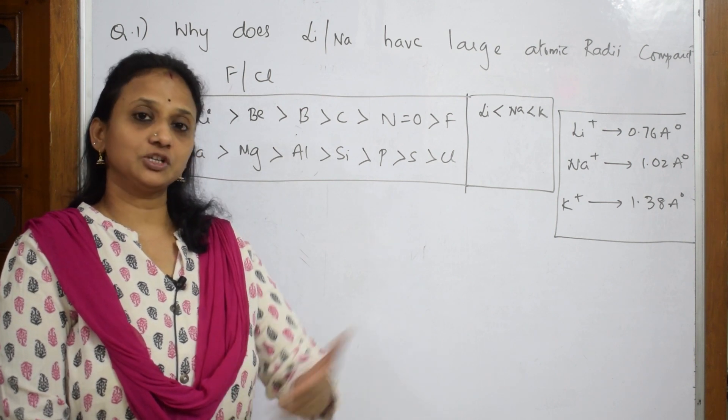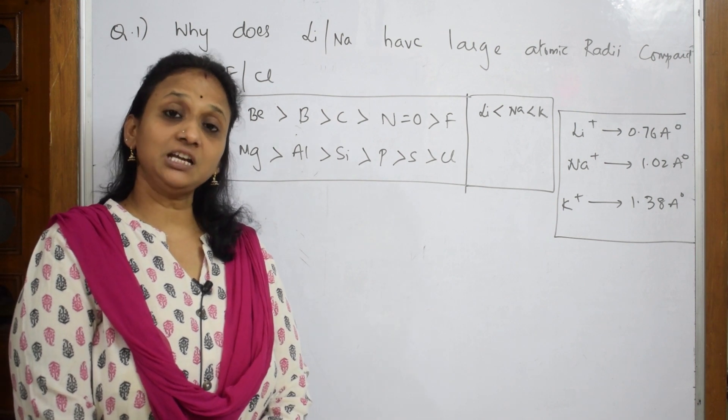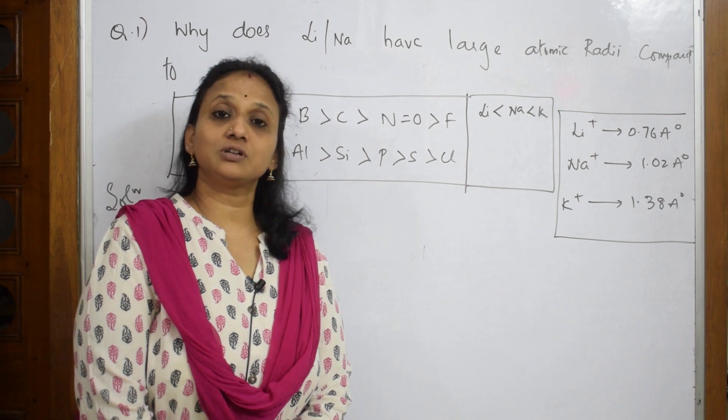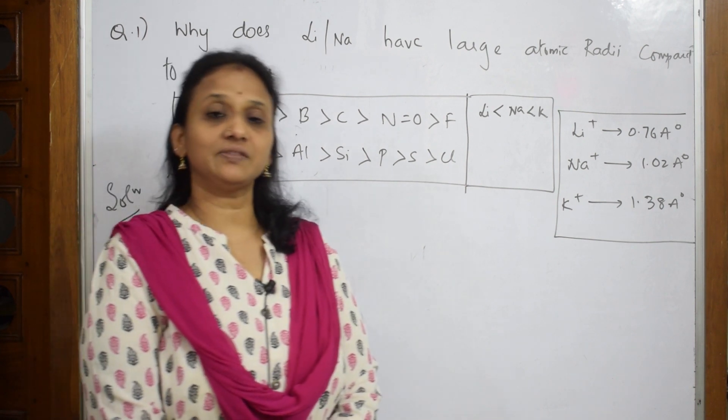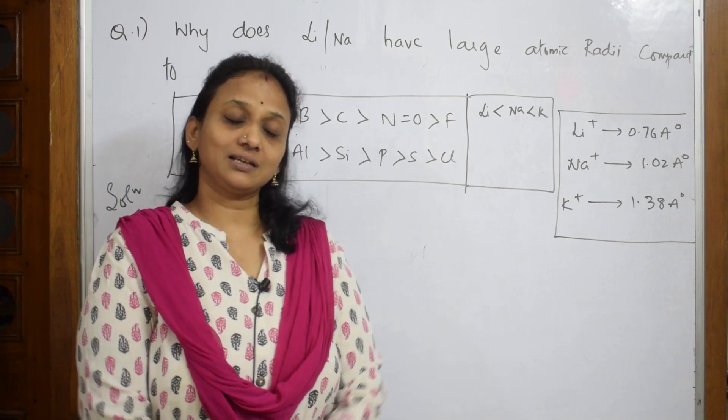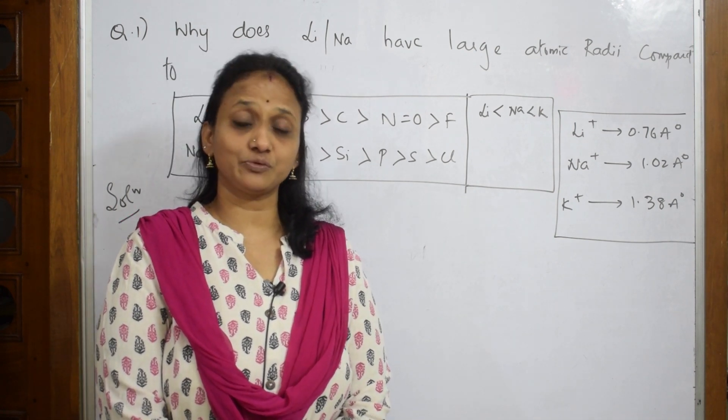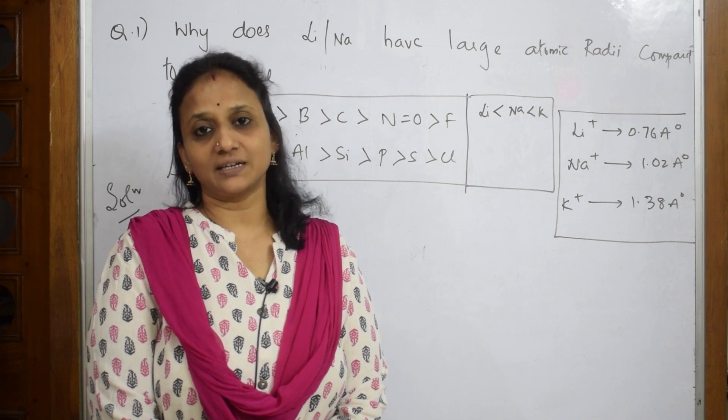Then we did differences between d-block and f-block. After that, I taught you the concept of atomic radii. In that, we studied different types like covalent radii, metallic radii, ionic radii, van der Waals radii - all these concepts have been covered.